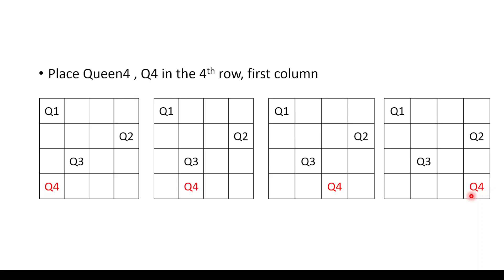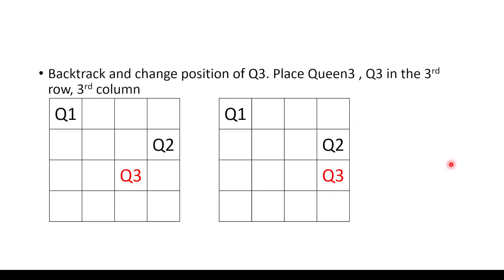We backtrack to Q3 and try shifting its position. Moving Q3 from column 2 to column 3 results in Q2 and Q3 being on the same diagonal. Moving Q3 to column 4 puts Q2 and Q3 in the same column. Since Q2 is already in the last column and cannot move further, we backtrack all the way and change the position of Q1.